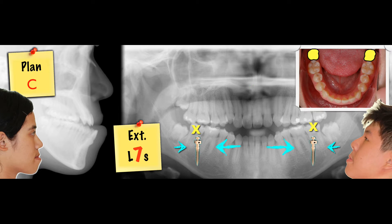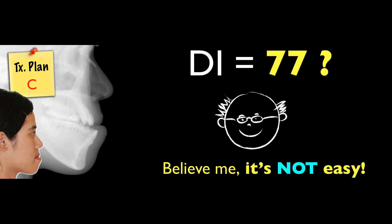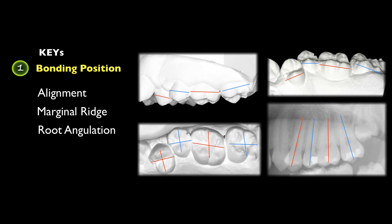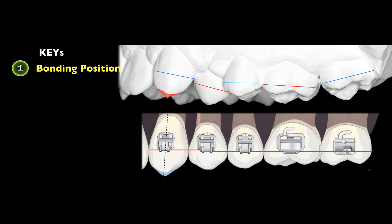So with a DI of 77, it is not easy. There are several key steps you're supposed to follow. Number one: bonding position — line up with marginal ridges. Take the panoramic X-ray to look at root angulation. With the model, do a visual assessment of your bone. For the canine, because it is out of occlusion, you might need to appreciate the canine height.